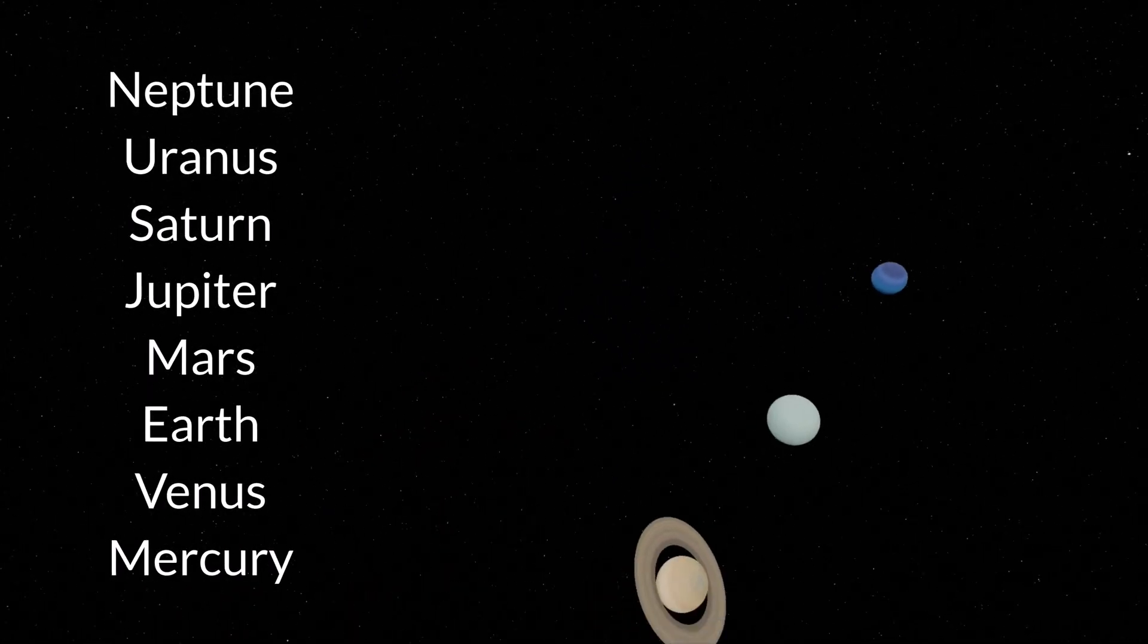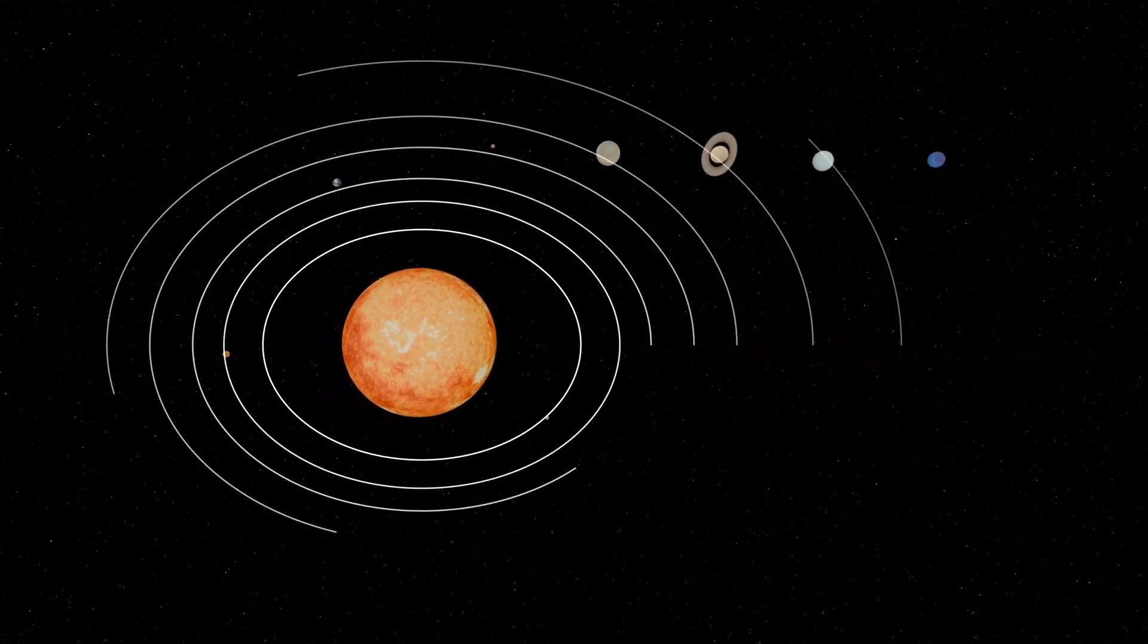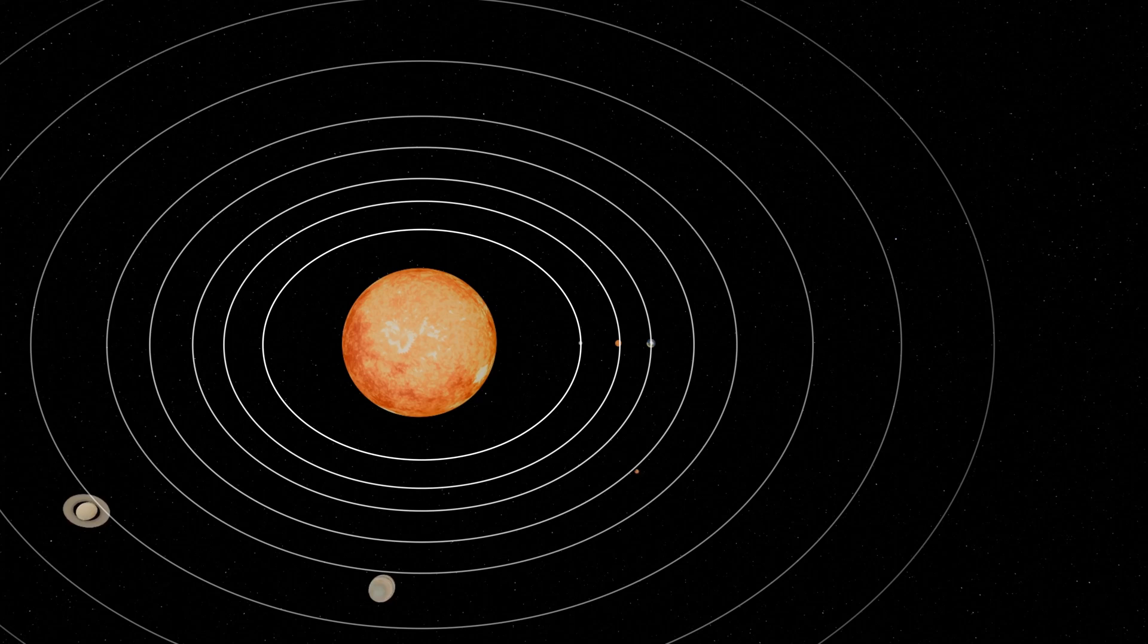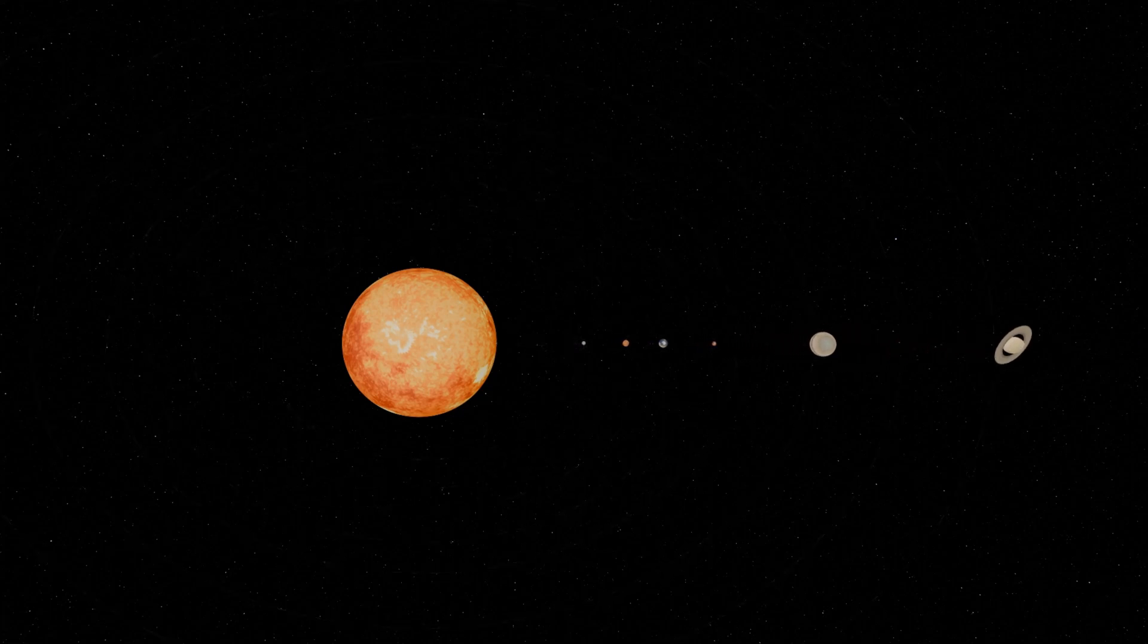When we start to look at how far each planet is from the Sun, we need to understand that every planet revolves around the Sun in an elliptical orbit, so their distance from the Sun changes throughout the orbit. We will take this into account and use the average distances for each planet.